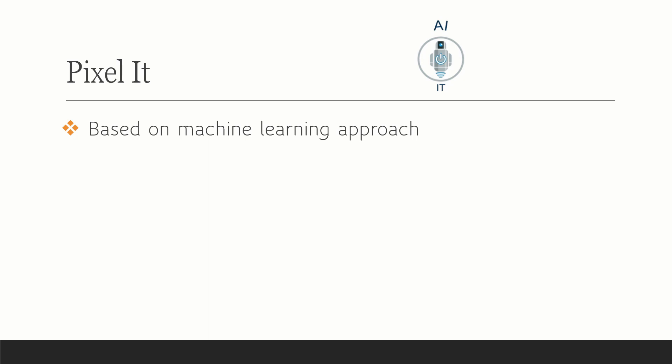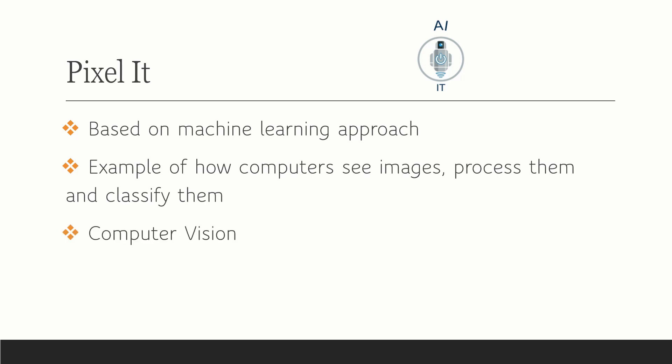Pixel It is an activity which is based on machine learning approach. It is an example of how computers see images, process them and classify them. This is based on the domain of computer vision.